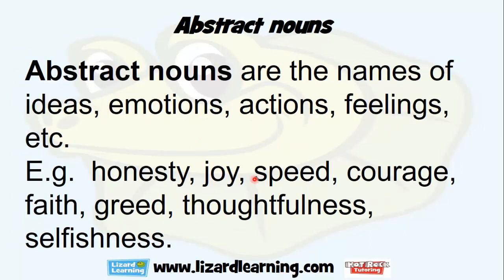Abstract nouns are the names of ideas, emotions, actions, feelings, etc. These are still things. For example: honesty, joy, speed, courage, faith, greed, thoughtfulness, selfishness.